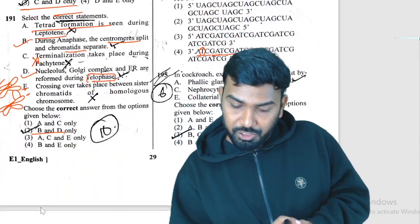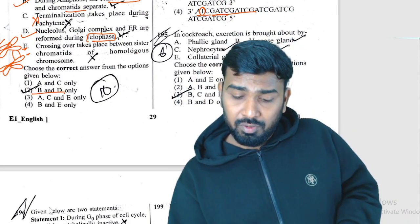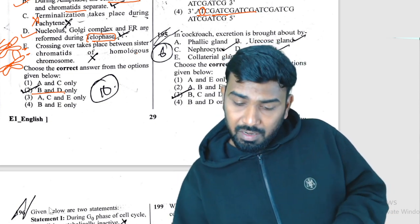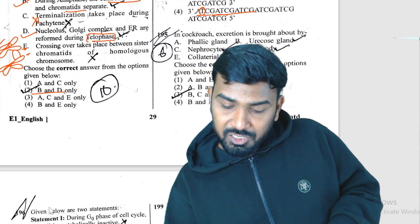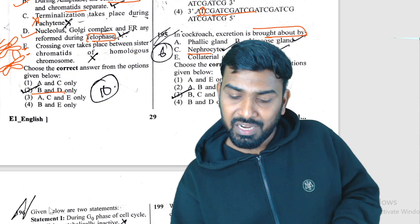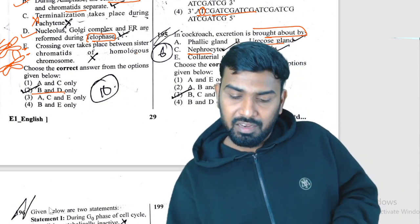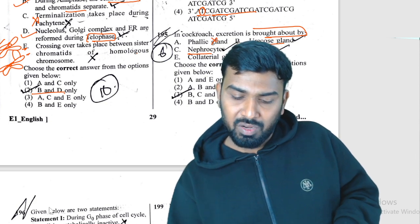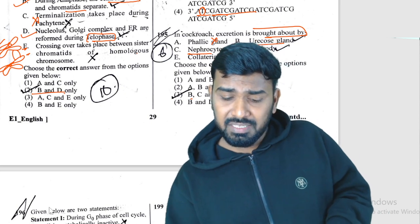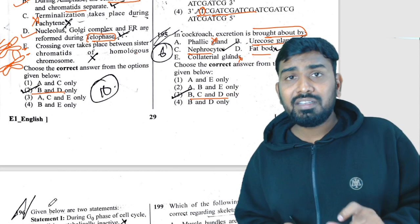Question 195: in cockroach, excretion is brought about by fat body, nephrocytes, and uricose glands — all are excretory structures. Phallic glands are for reproduction, not excretion. So B, C, and D are the correct excretory structures.